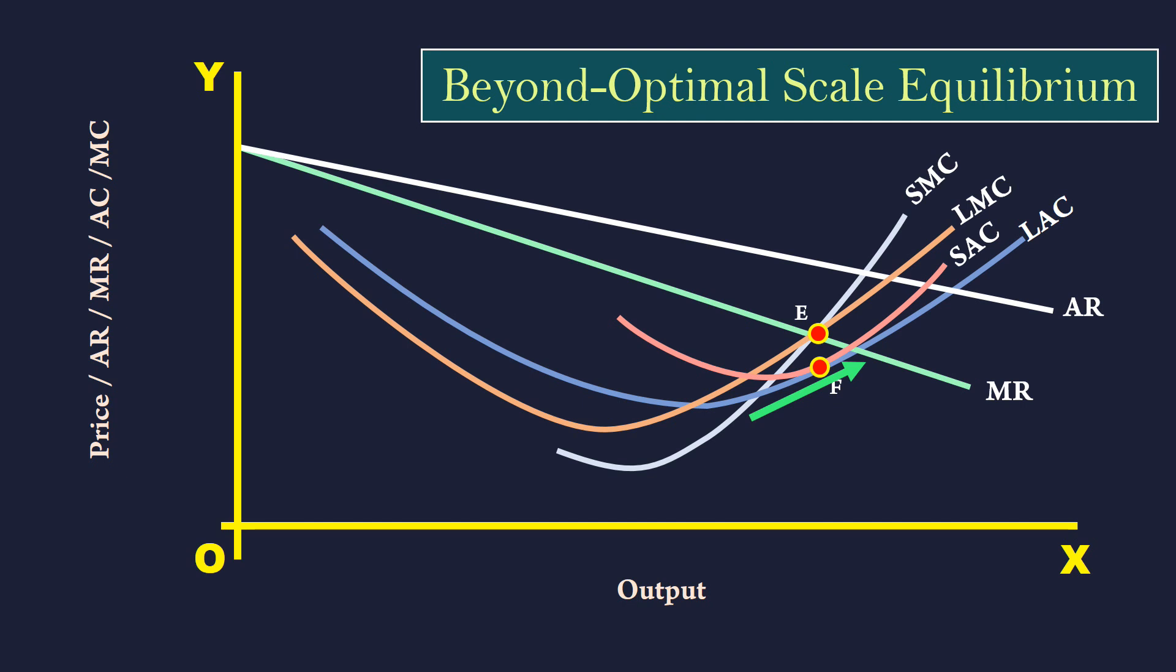Again, at that point, SAC is also increasing. Point F lies to the right of the minimum point of SAC and LAC curves. From the SAC curve, we can learn the firm is larger than optimal and over utilizing its productive capacity.